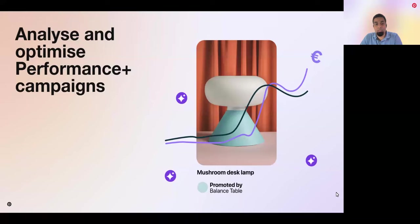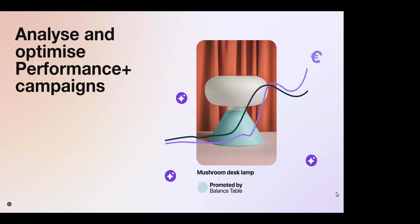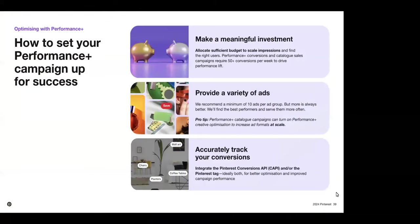Thanks, Murali. While Performance Plus campaigns are automated, there are a number of adjustments you can make to get the most from them. Let's review three steps to get your Performance Plus campaigns set up for success. First, make meaningful investment: allocate sufficient budget to scale impressions and to find the right users — generally enough for a two to four week test, or five times your cost per action goal. Also, Performance Plus conversions and catalog sales campaigns require 50 plus conversions per week to drive the performance lift.